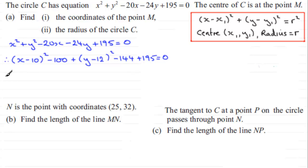So if we just tidy this up, we therefore have (x - 10)² + (y - 12)². Now we've got -100 - 144 + 195. If we work those out, we end up with -49. So if we add 49 to both sides, it comes to equal 49.